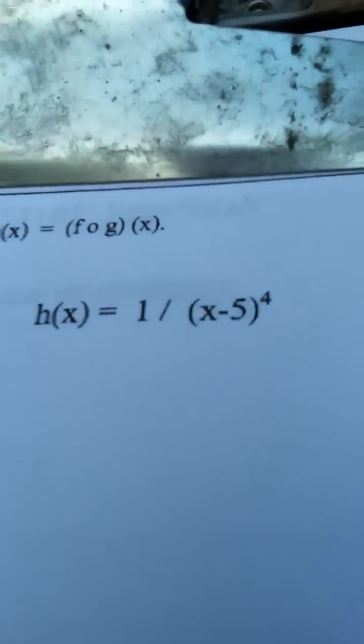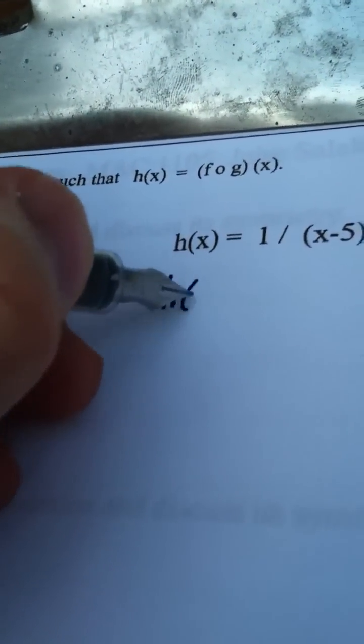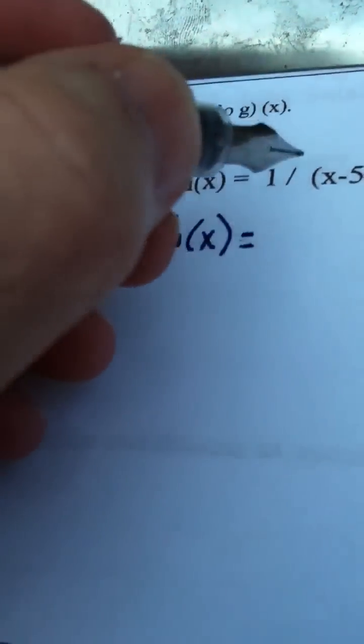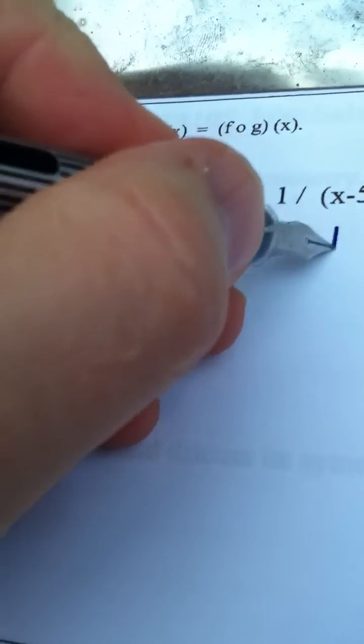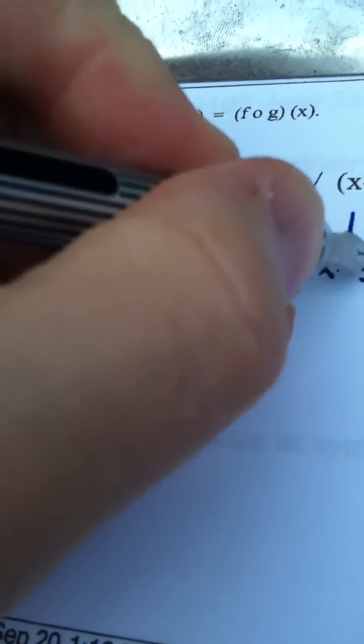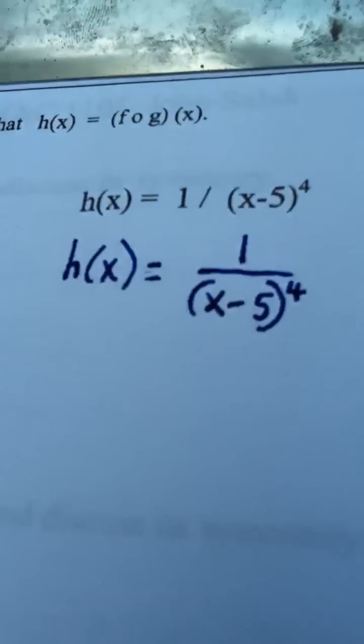Let's look over here. Let me write this a little bit better. H(x) is really a rational function. We have 1 on the top and we have x minus 5 raised to the 4th power on the bottom.